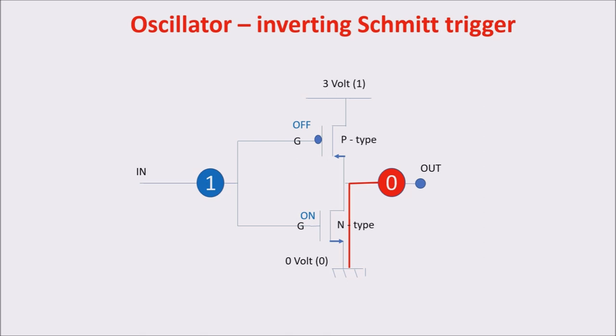On the contrary, when we apply a zero, this voltage is lower than the threshold voltage of the P-type transistor, thus turning it ON and connecting the output with the higher voltage, so with our one. So, we have to overtake two threshold voltages in order to turn the transistors ON and realize the inversion.